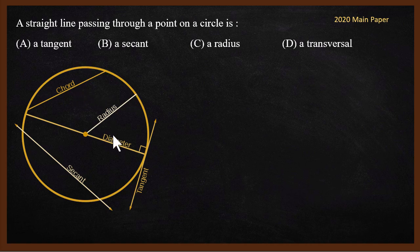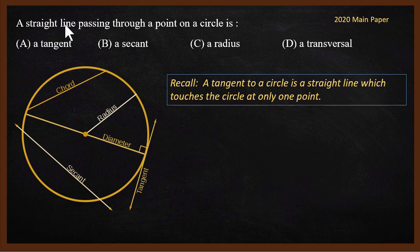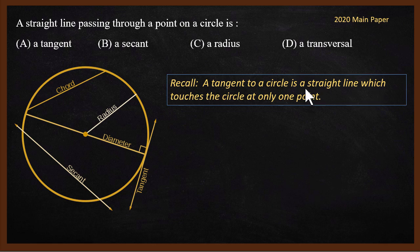What is the question? The question says a straight line passing through a point on a circle. So tangent, a tangent to a circle is a straight line which touches the circle at only one point. The answer is tangent.